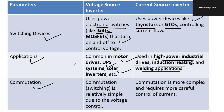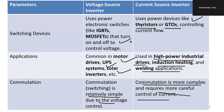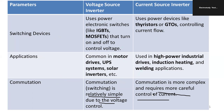Regarding commutation — that is, turn-off commutation — in the VSI it is relatively simple due to voltage control. Comparing with the current source inverter, commutation is more complicated and requires more careful consideration. These differences explain why the voltage source inverter is most popular compared to the current source inverter.